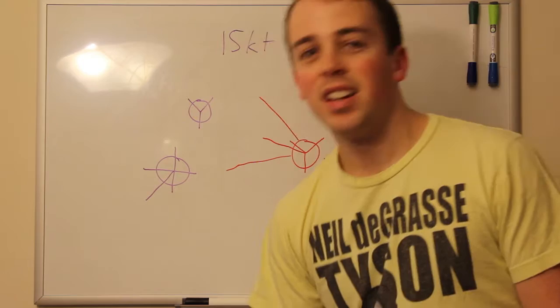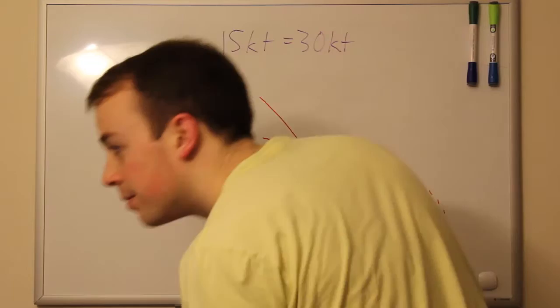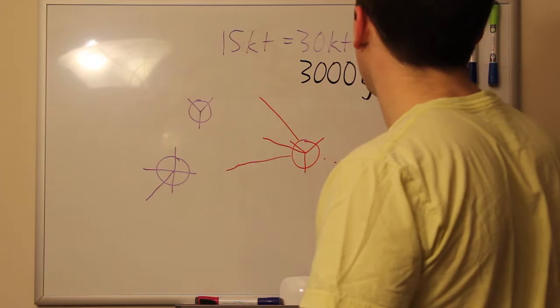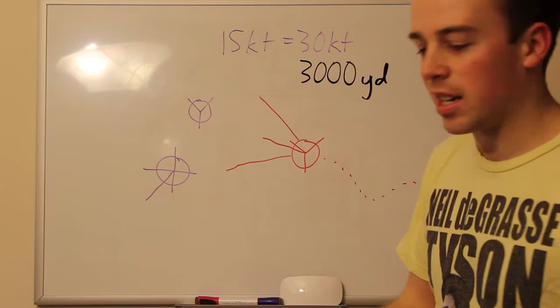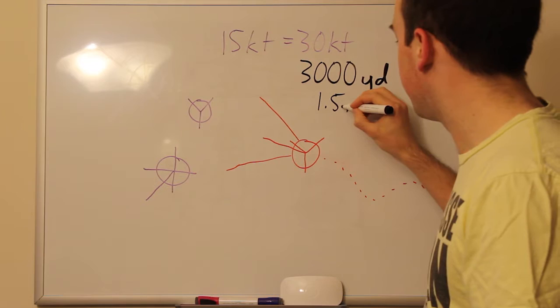So the rule of sixes says, take this speed, multiply by two, and then add two zeros to the end of this, and in six minutes this is how far you'll go. This is very accurate. This real number in actuality may be like 3,010 yards. It's really accurate. And this is 1.5 nautical miles.